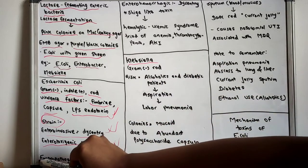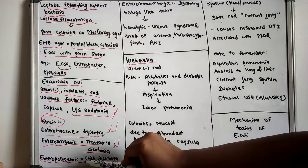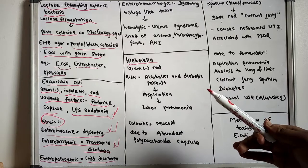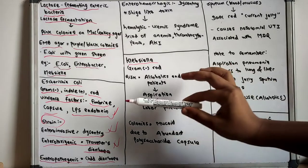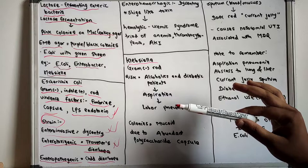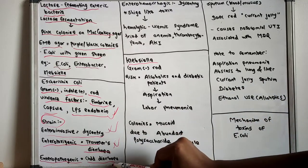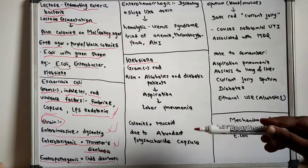The enteropathogenic E. coli are mainly responsible for childhood diarrhea. No toxins are produced by this strain, but it adheres to the apical surface and flattens the villi of the intestine, thereby preventing absorption and causing diarrhea in the child.